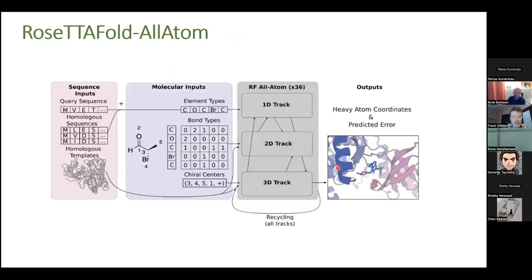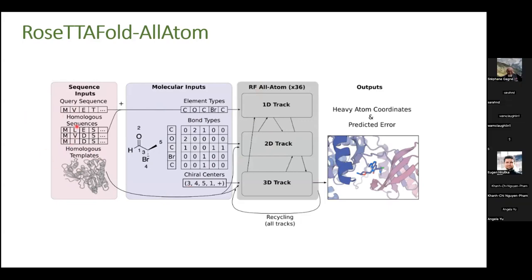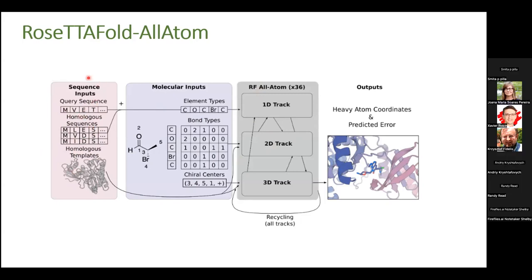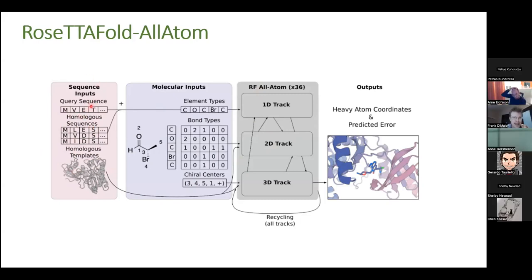To summarize the architecture: you get the multiple sequence alignment — the normal RoseTTAFold input — plus templates, concatenated with molecular information: element types, bond types, the bond distance graph, and finally the chiral centers going into the 3D track.